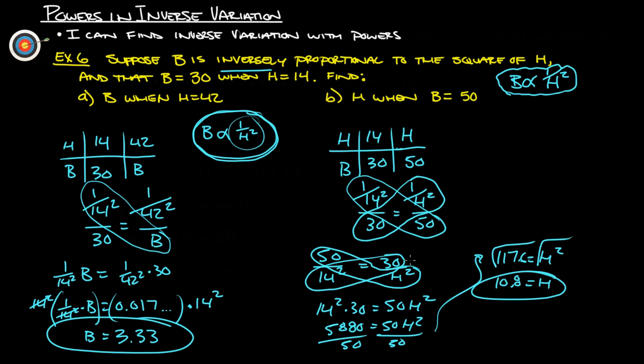That's really it for powers and inverse variation. I think the big key here is setting up your direct variation. Even though it's inverse variation, we can write it as a direct variation, and then you just do cross products. If you don't like that way, there is a different way that our textbook does it on page 172. If you have any further questions, please feel free to ask. Thanks.